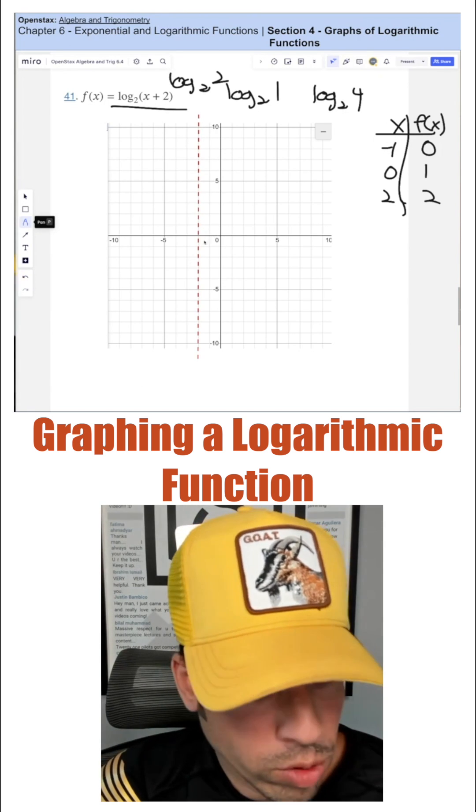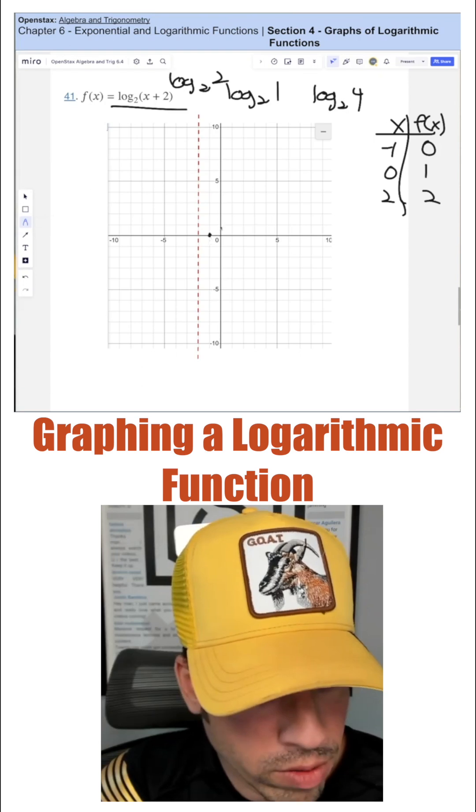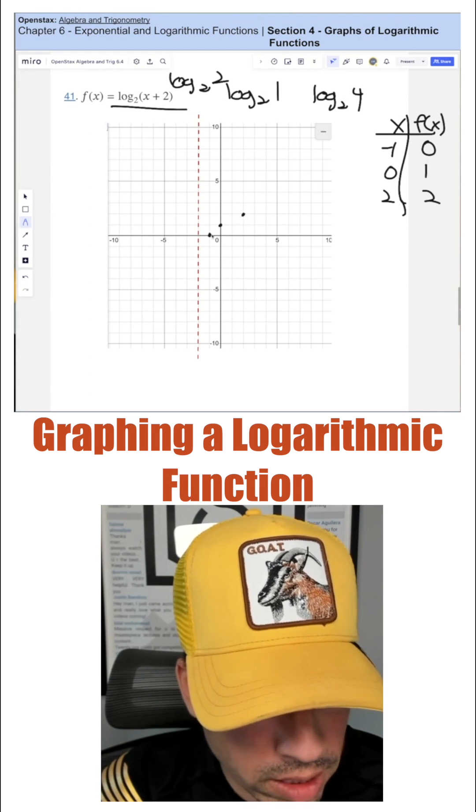And then with these three points, we have negative one, zero, we have zero, one, and then we have two, two like this.